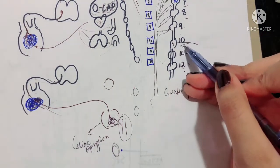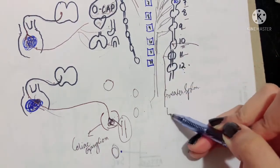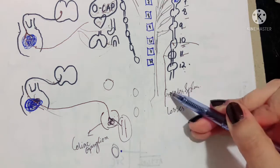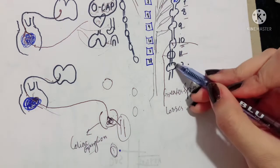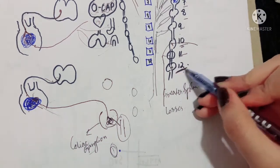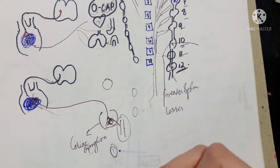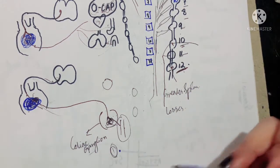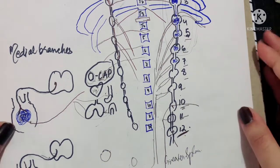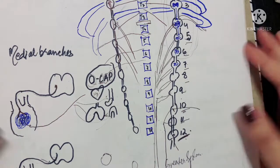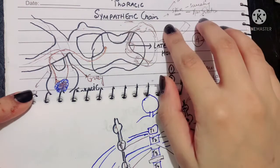Similarly, the medial branches of the 10th and 11th ganglions form the lesser splanchnic nerve. The lesser splanchnic nerve pierces the crus of the diaphragm and enters the celiac ganglion or superior mesenteric ganglion to synapse there. Finally, the medial branch of the 12th thoracic ganglion forms the least splanchnic nerve, which goes and synapses with ganglions placed close to the organs to supply them.